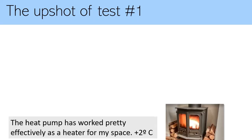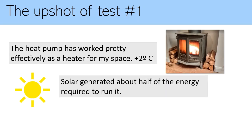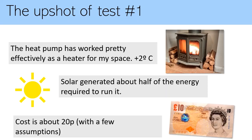The upshot of test one: the heat pump actually worked pretty well as an effective heater for the space — a 21-foot by about 12-foot living room diner — gaining plus two degrees Celsius over the course of the hour, bringing it from 18 degrees to a comfortable 20 degrees. The solar generated about half the energy required to run it. If we assume the solar is just being used to power the heat pump, that's about half the cost covered, which at about 39-40p per kilowatt hour equates to about 20p for running the aircon for the hour.